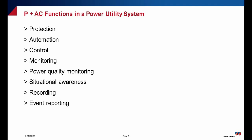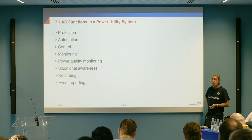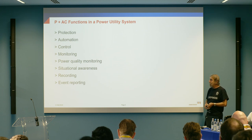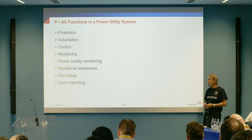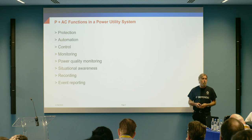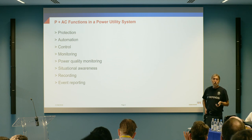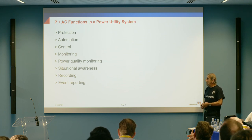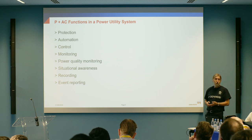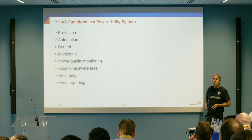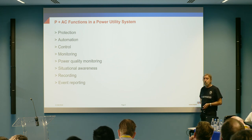When we think about the P plus AC functions in a power utility system, they are actually overlapping functions. It is becoming more and more difficult to separate one from the other, because in order to implement a protection function you have to have monitoring of the state of the system, you have to implement certain automation functions in order to restore the state of the grid after an event, you have to have the ability to control the system locally, remotely, at the system level and at the distribution level. You also need to monitor the quality of the power, which is becoming very critical because we have computer-driven loads that are sensitive to voltage variations.